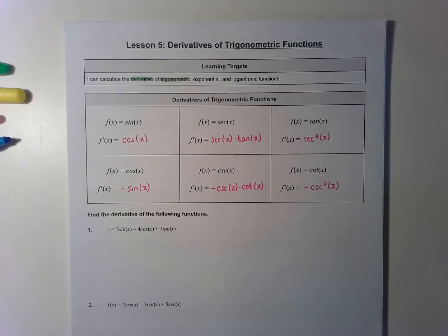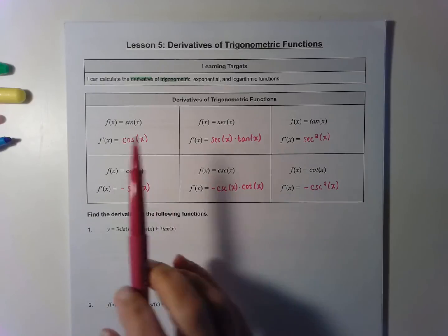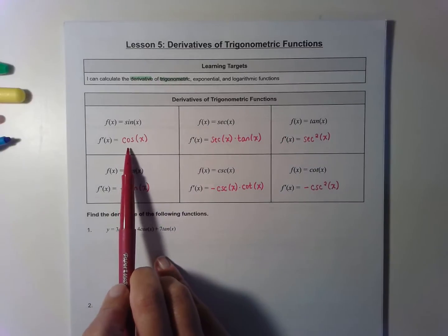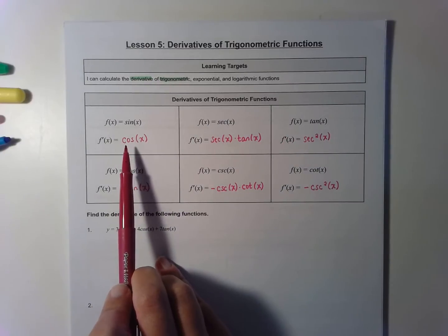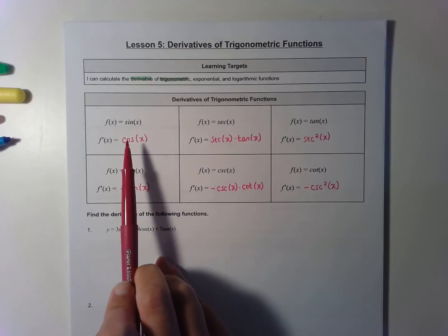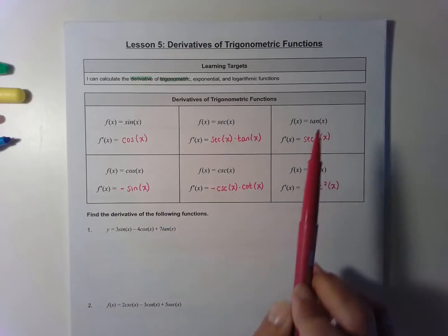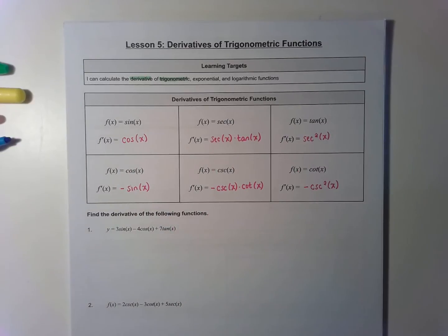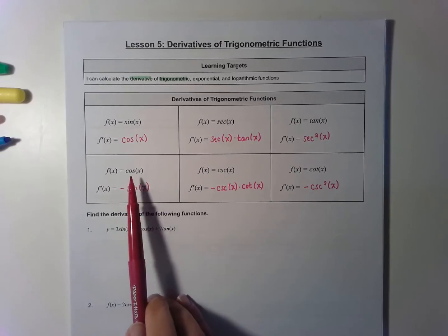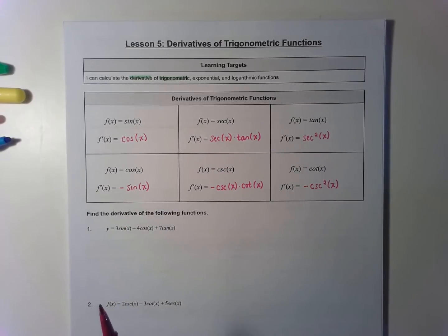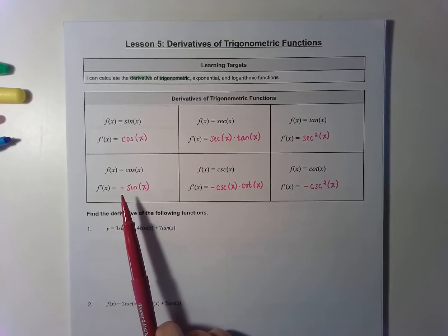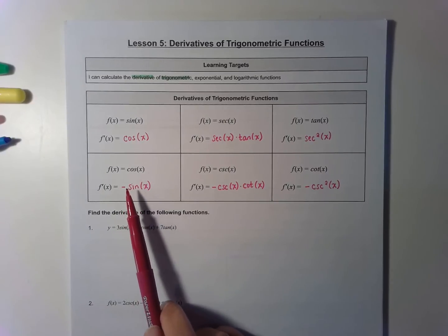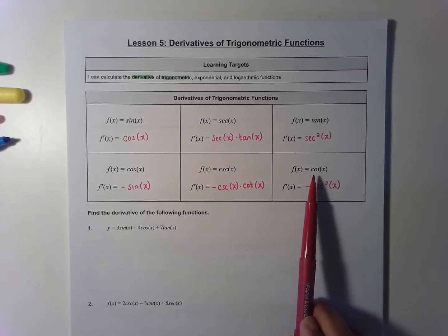None of these rules are particularly hard, but memorizing and remembering them can be really challenging. There are a couple of patterns I want to point out. If you take the derivative of sine, secant, or tangent, the derivatives have the same sign as the original. So sine has positive cosine, secant has positive secant tangent, and tangent has positive secant squared. However, if you take the derivative of cosine, cosecant, and cotangent, all of those derivatives have the opposite sign.